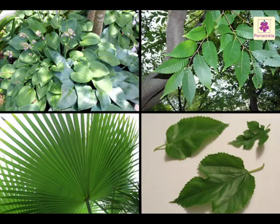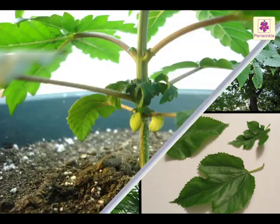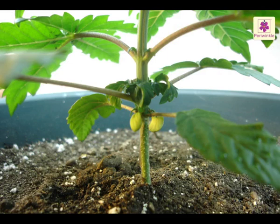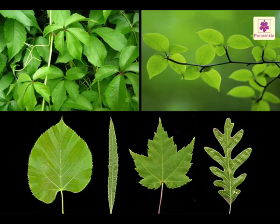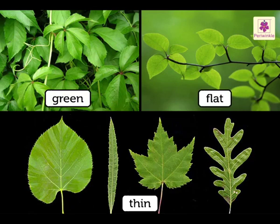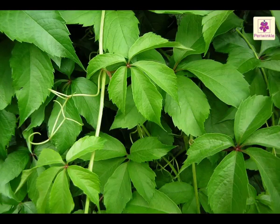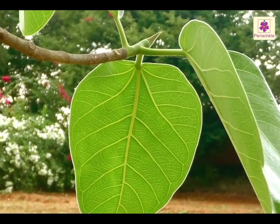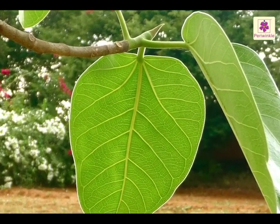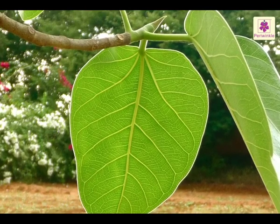Leaves come in all shapes and sizes but they all have one function in common — they prepare food for the plant. Most leaves are green, thin and flat. The green colour of the leaf is due to the presence of a substance called chlorophyll.